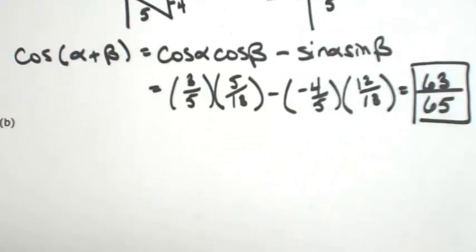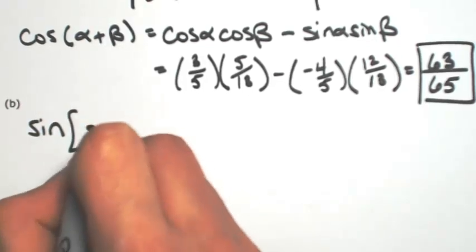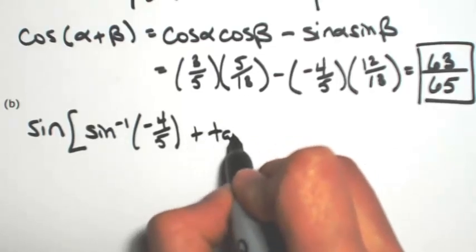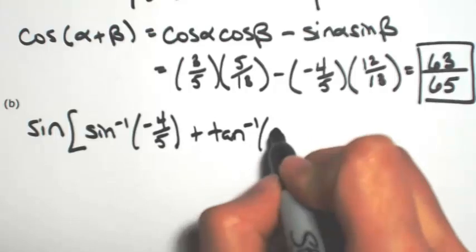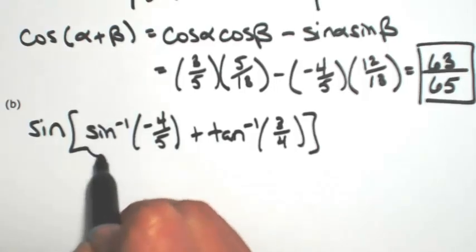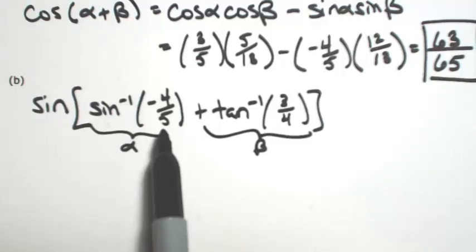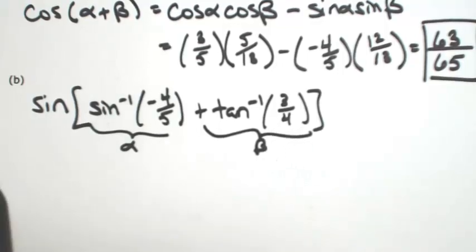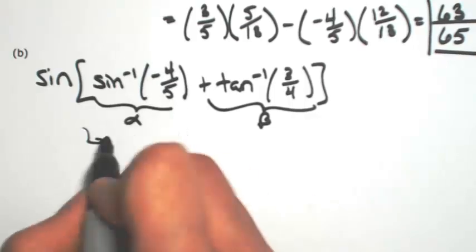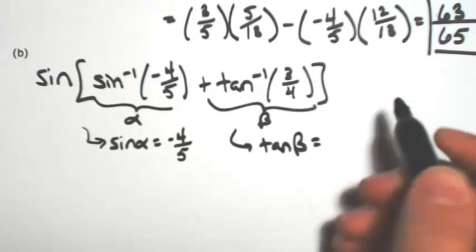Let's do one more like that — they are a little bit trickier. Let's do sine this time: the sine of the inverse sine of negative 4 fifths plus the inverse tangent of 3 fourths. Again, inverses are just angles, so I'll call the first inverse alpha and the second one beta. The domains are satisfied because negative 4 fifths is between negative 1 and 1, and 3 fourths just needs to be real for inverse tangent. By the definition of inverses, the sine of alpha equals negative 4 fifths, and the tangent of beta equals 3 fourths.